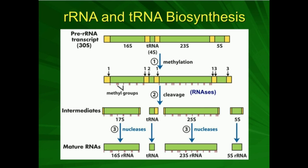In both rRNA and tRNA, some of the nitrogenous bases — like adenine, guanine, cytosine, and uracil — are going to have to be modified into what some people refer to as funny bases. They're just not your typical four bases found in RNA. In some cases, in rRNA and tRNA, we actually have thymine, which is very unusual.